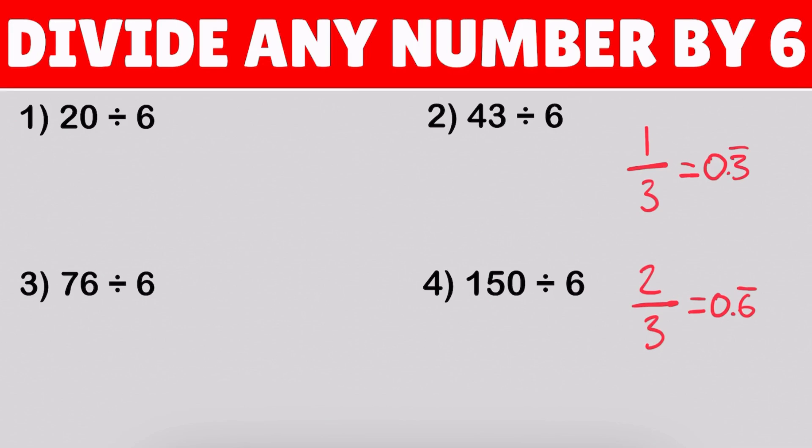So, let's start with our first problem. 20 divided by 6. Now, at first, you might immediately notice that 20 is not divisible by 6 to become a whole number. So, how do we do this? Well, the trick is simple. You see, 6 is equal to 2 times 3.